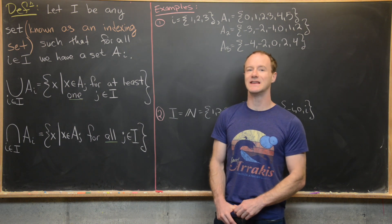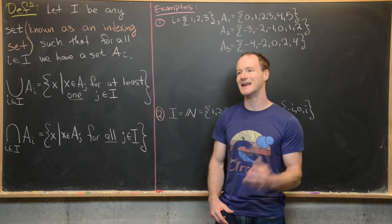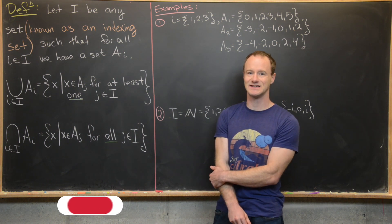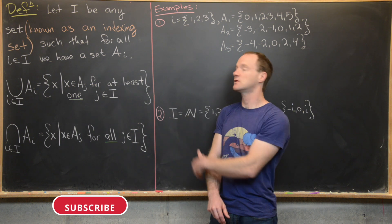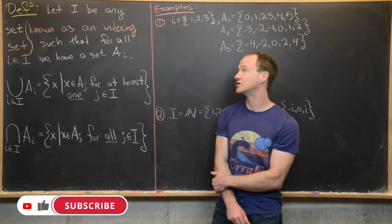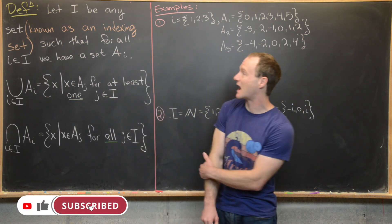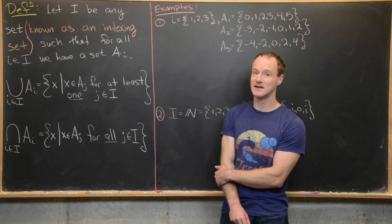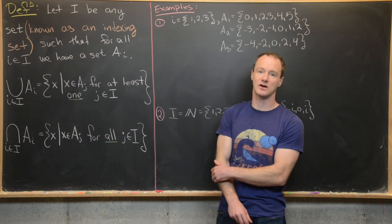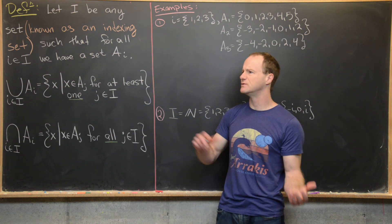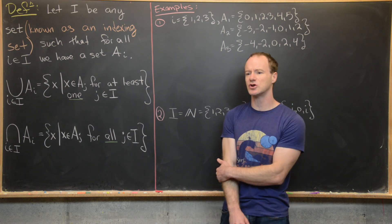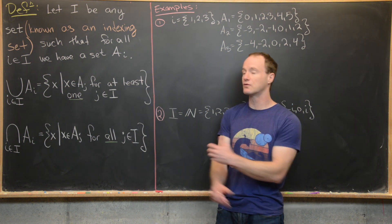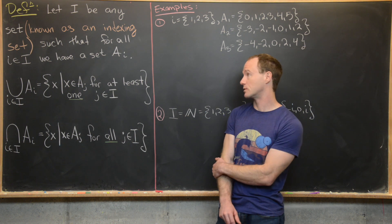Here we're going to look at the notion of an indexing set and intersections and unions over indexed sets. So let's look at the definition. We want to start with I, where that is any set — and I really mean any set here. There are some usually standard choices for indexing sets, but you can really take it to be arbitrary.